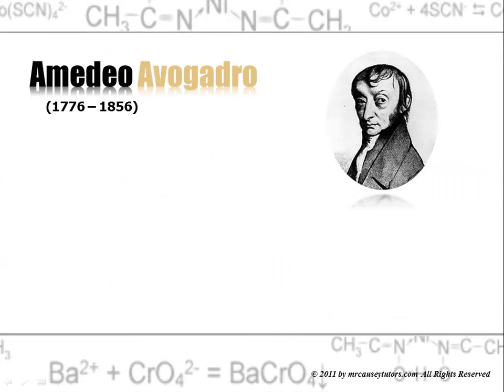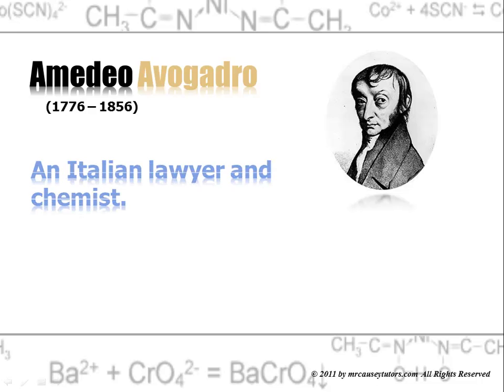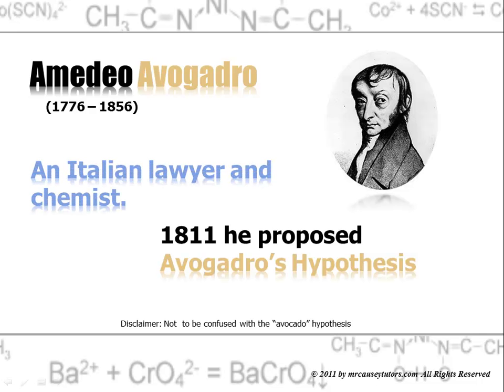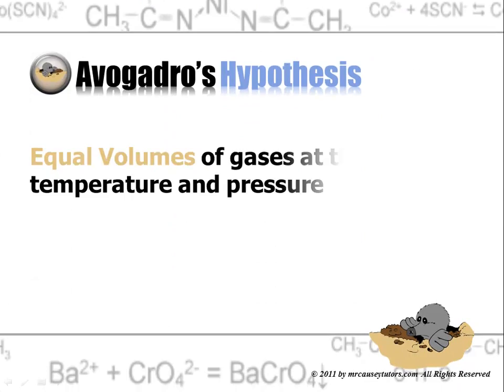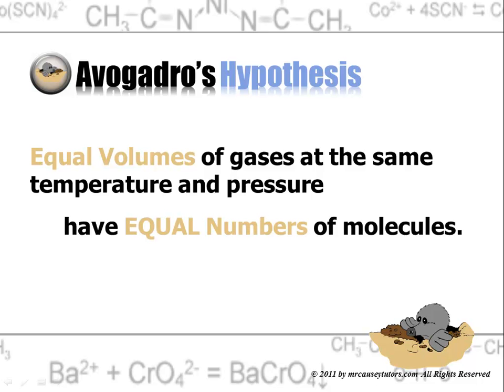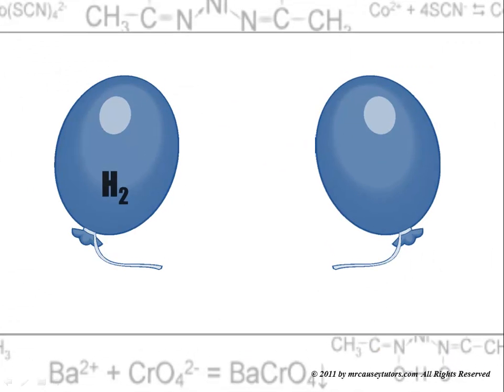Amadeo Avogadro was a great Italian lawyer and chemist and in 1811 he proposed Avogadro's hypothesis. Avogadro's hypothesis states equal volumes of gases at the same temperature and pressure have equal numbers of molecules. So if we have some H2 and some O2 we'll have the same number of molecules as long as they're at the same volume and the same temperature.